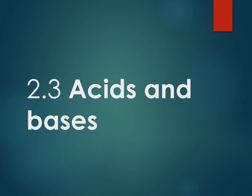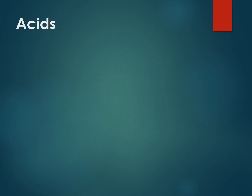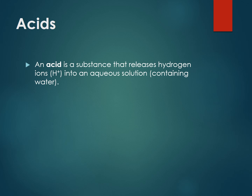Acids and bases are two substances that are quite opposite to each other. Let's talk about acids first. An acid is a substance that releases hydrogen ions — that's a hydrogen atom that's lost an electron — and it releases them into an aqueous solution. In other words, it releases them into water. Aqueous means water.